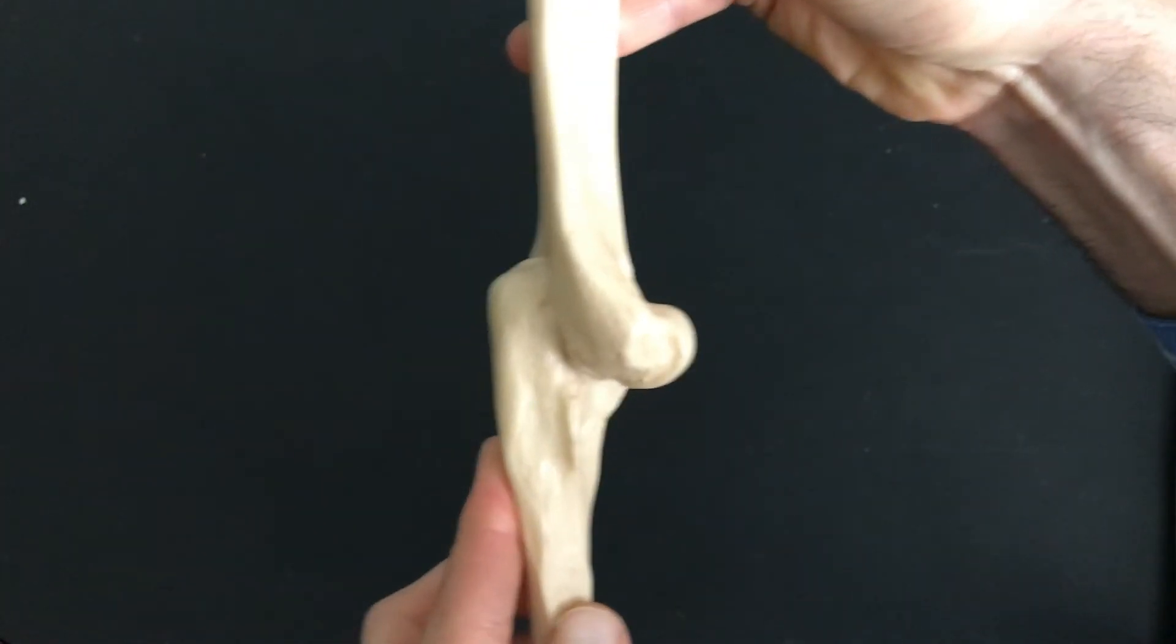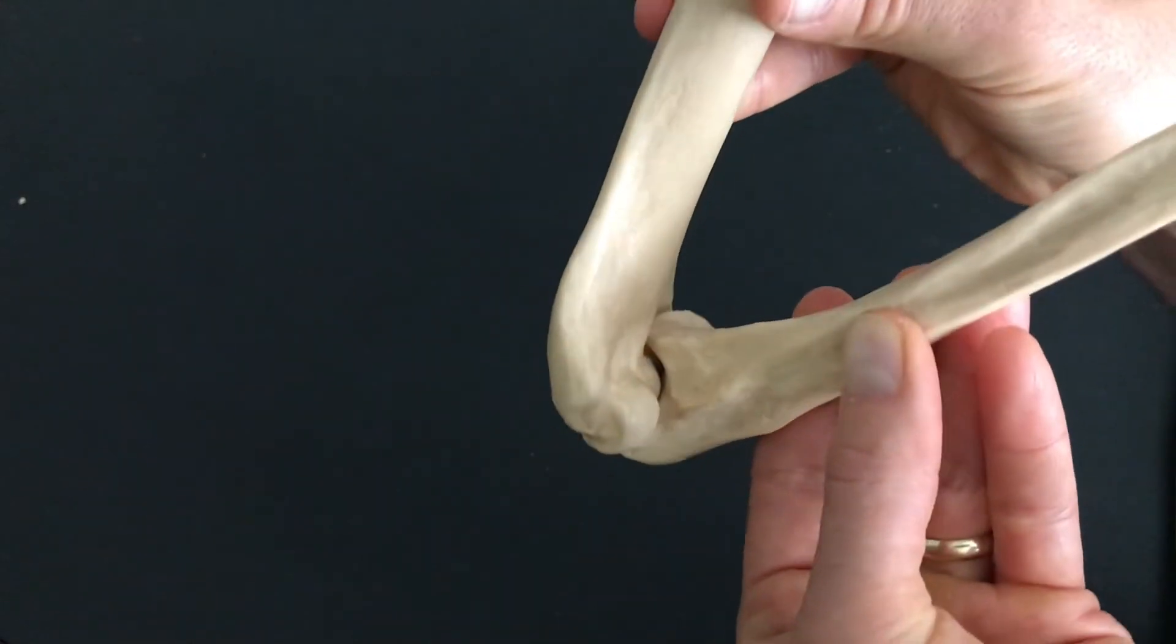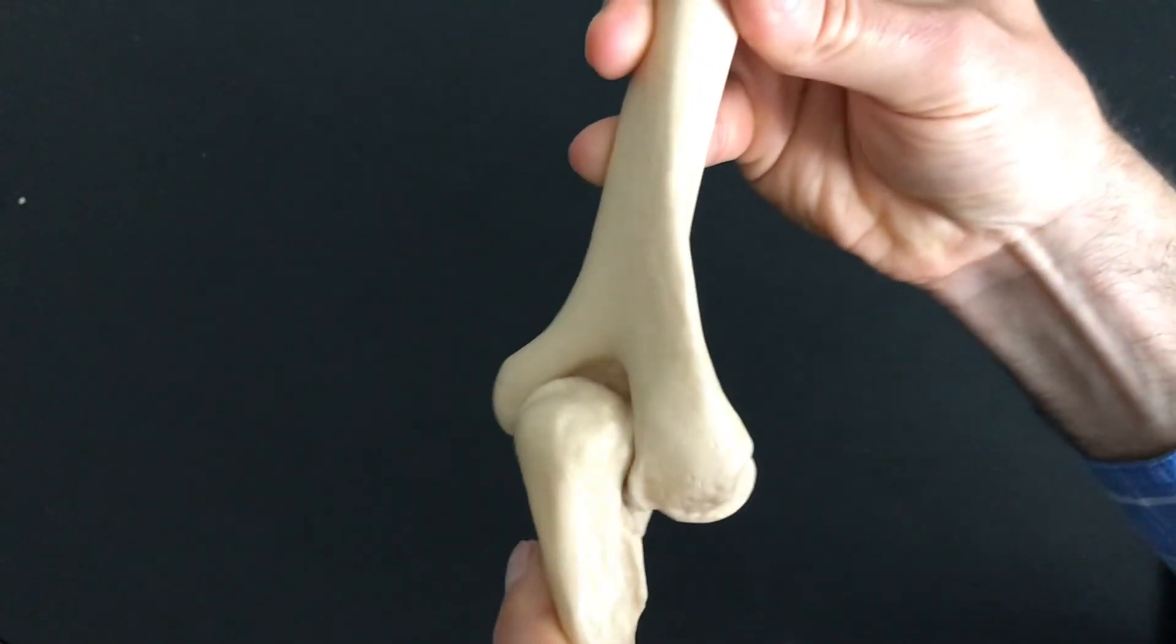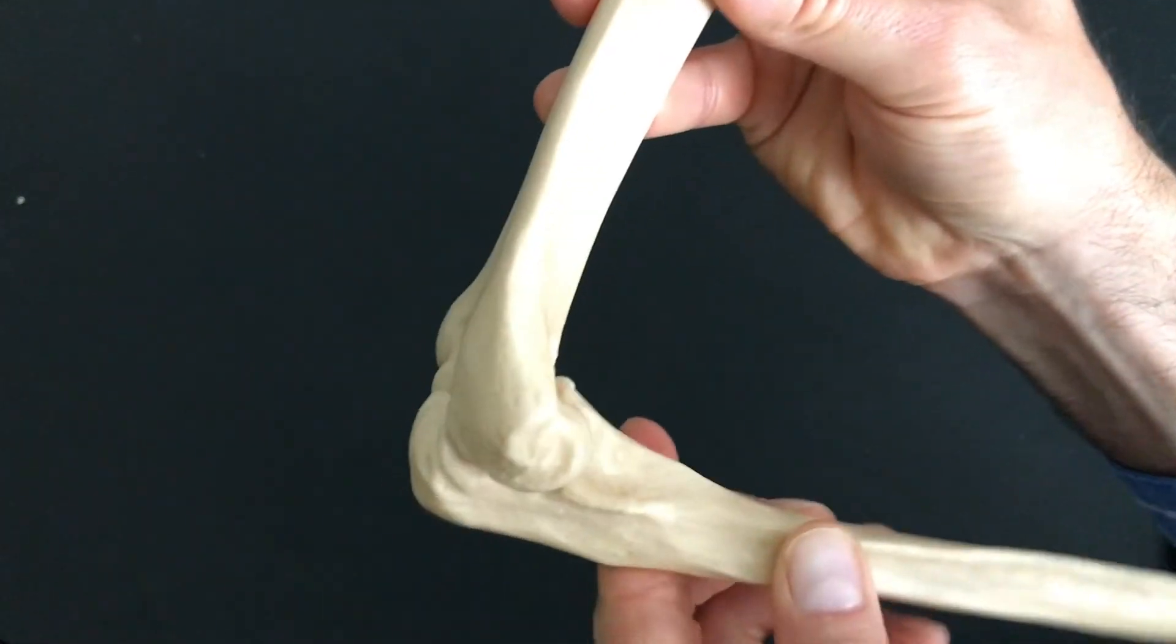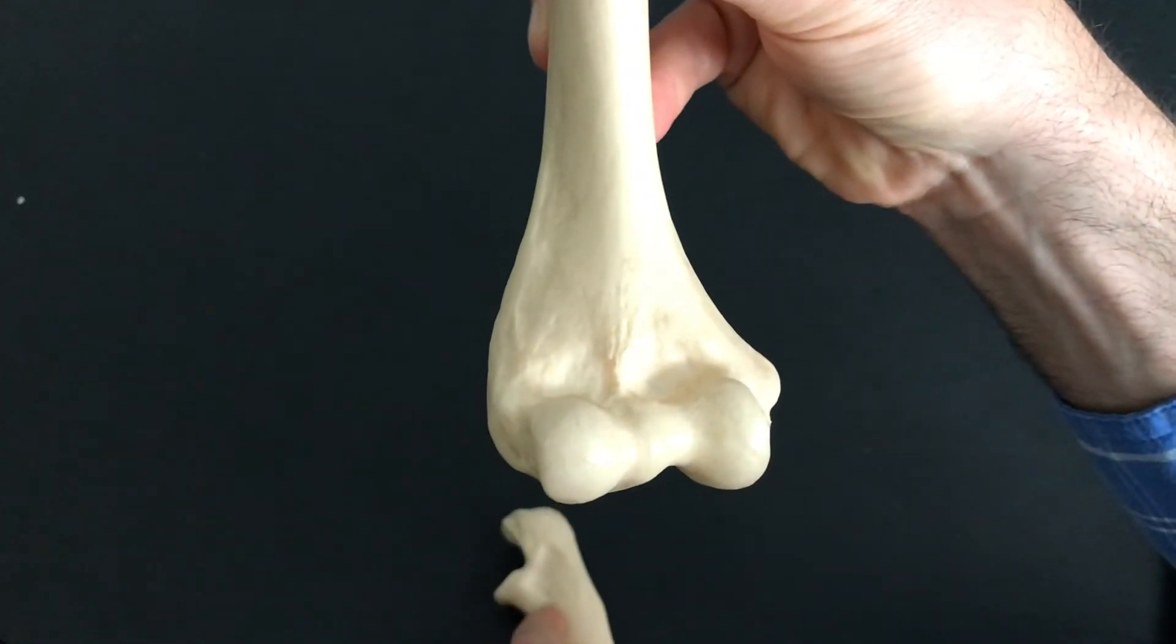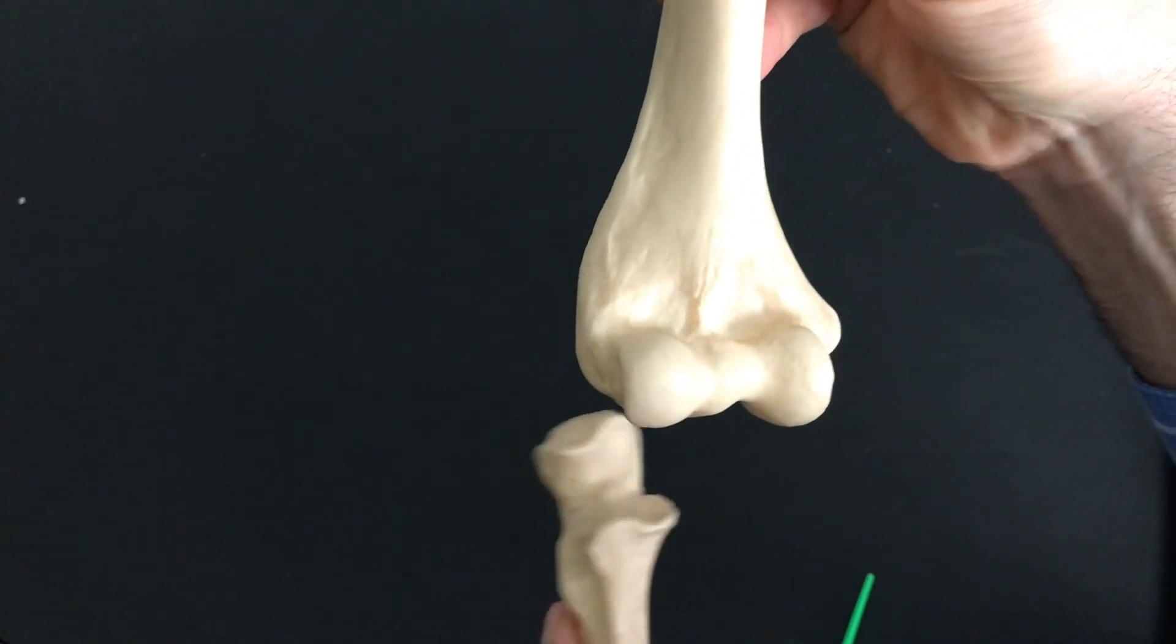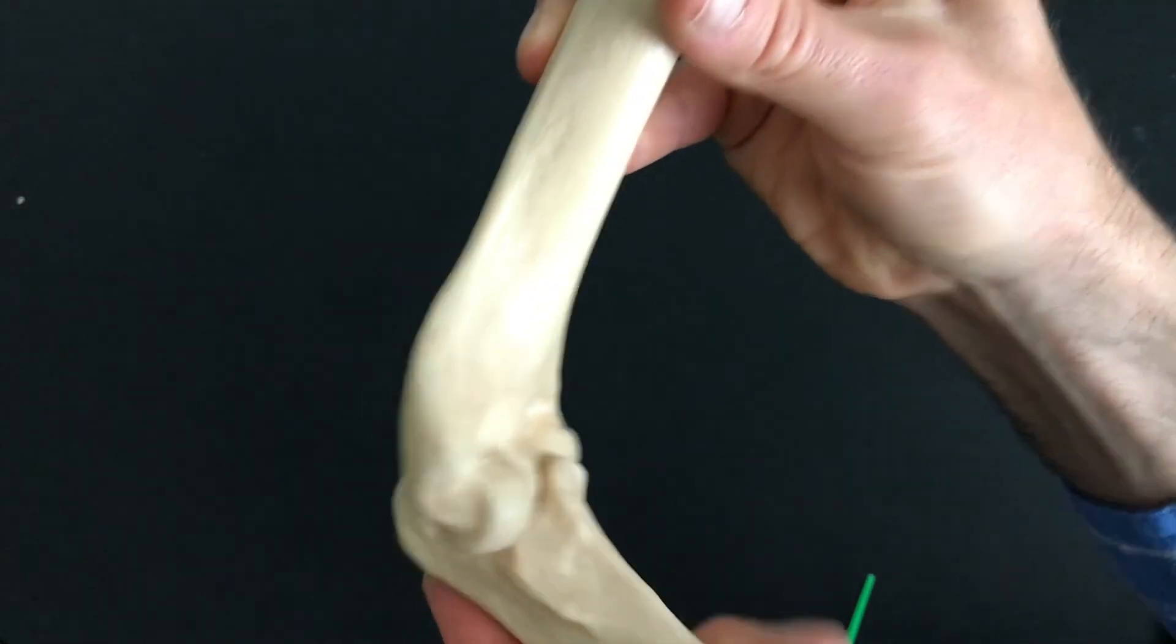So again, elbow straight, elbow 90 degrees, elbow bent all the way up. You make this nice movement right here, right along the condyle of the humerus, the smooth portion of the humerus, with the trochlear notch fitting right into the trochlea.